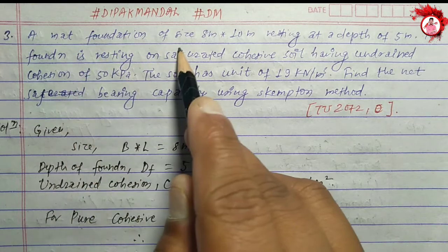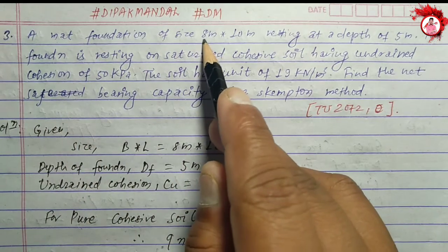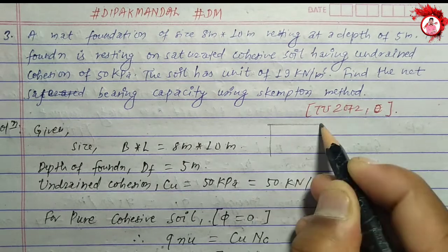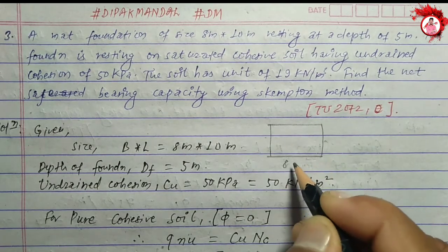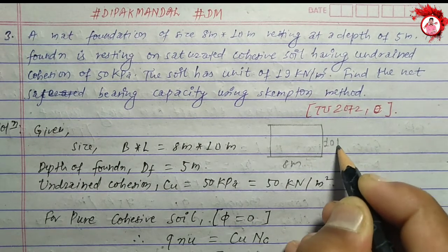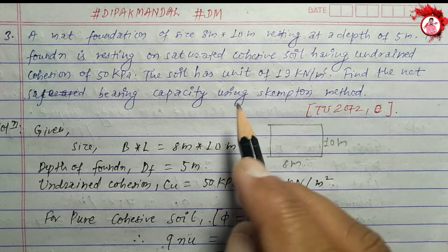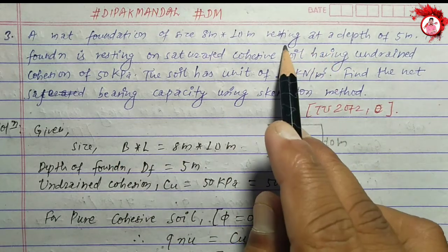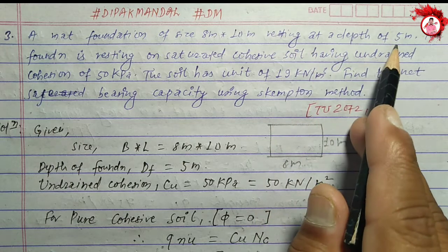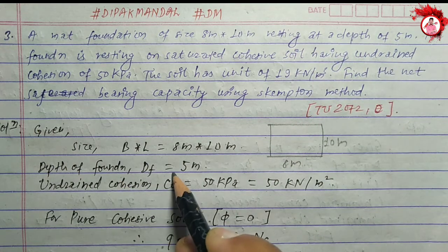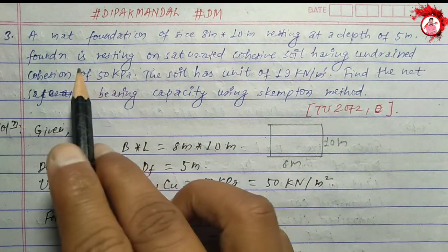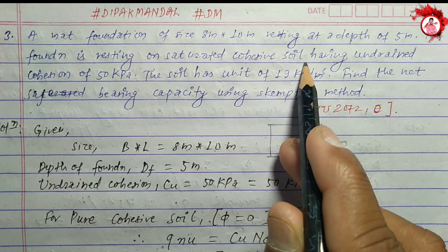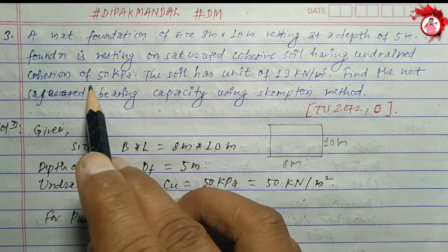So, we have a MAT foundation of size eight meter by ten meter. The size of this MAT foundation is eight meter by ten meter. The foundation is resting at a depth of five meters.